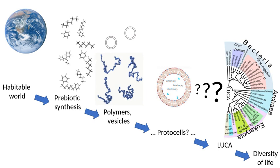Three major macromolecules are essential for all known forms of life. The first is deoxyribonucleic acid, or DNA. DNA is the main component of chromosomes and the material that transfers genetic characteristics in all life forms. DNA is an extremely long macromolecule constructed of two nucleotide strands coiled around each other in a ladder-like arrangement, with side bases composed of alternating phosphate and deoxyribose units, and rungs composed of the bases adenine, guanine, cytosine, and thymine. The genetic information of DNA is encoded in the sequence of the bases and is transcribed as the strands unwind and replicate.